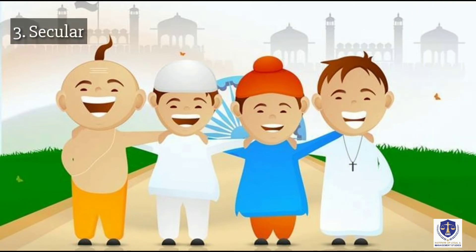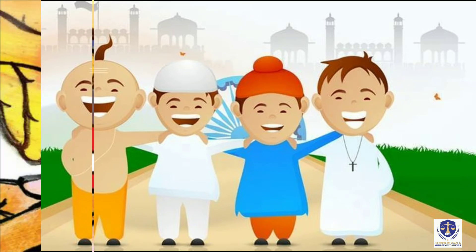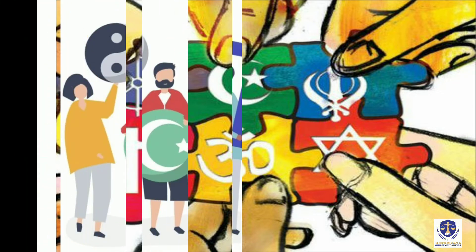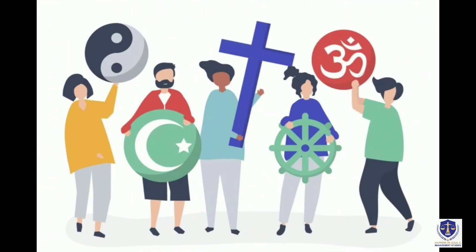Third, Secular. The word secular means that there will be no discrimination against anyone on the grounds of religion. The state will have no religion and every religion is equal for the state. It incorporates the idea of positive secularism. The word secular was added in the year 1976 by the 42nd amendment. The freedom to practice, conscience, profess and propagate any religion is guaranteed to every citizen of India under Article 25 of the Indian Constitution.